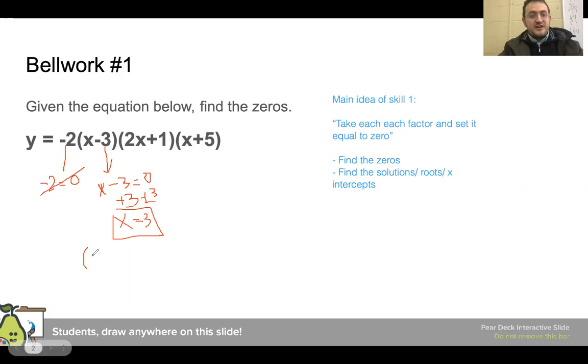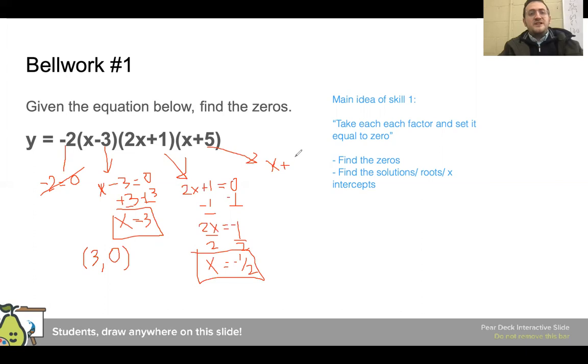And sometimes they may ask you to put it into a coordinate form. So in that case, it would be three comma zero. All right, then the next one, I got two x plus one equals to zero. And I'm going to subtract one on both sides. And I'm going to divide it by two. So I get that x is equal to negative a half. And then the other one, I just have x plus five equals to zero. And I'm going to subtract by five on both sides. Let me get that x is equal to negative five. And that would be a sample skill one.